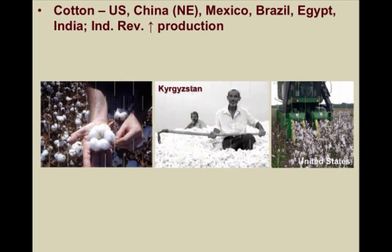Cotton is a major product in the southern United States, northeastern China, as well as places like Mexico, Brazil, Egypt's Nile Delta, and the Punjab region between Pakistan and India. Cotton cultivation expanded initially after the invention of the cotton gin by Eli Whitney in 1793. The Industrial Revolution then produced machines for spinning and weaving that further increased production, lowered prices, and put cotton goods within reach of mass markets. Today, the means of production vary greatly between traditional and modern methods, such as the combine. Synthetics like nylon and rayon now compete with natural cotton, yet it remains high in demand.